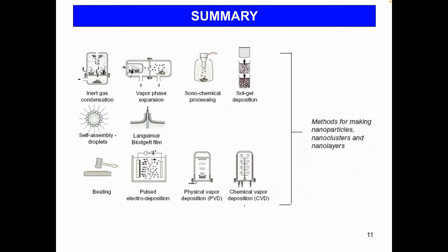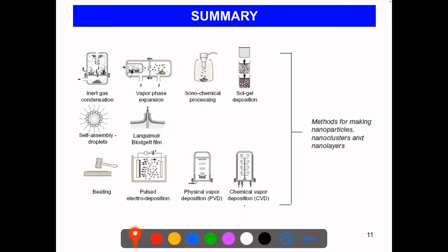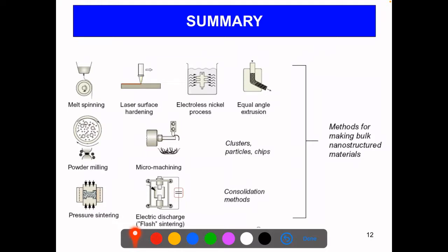In summary, this information was gathered from the reference book shared with you. There are several different techniques to make nanoparticles, nanoclusters, and nanolayers. Today we talked about top-down approaches like melt spinning, powder milling, and micromachining. In the next class, we'll discuss bottom-up approaches including gas phase and liquid phase reactions, as well as CVD and PVD techniques.